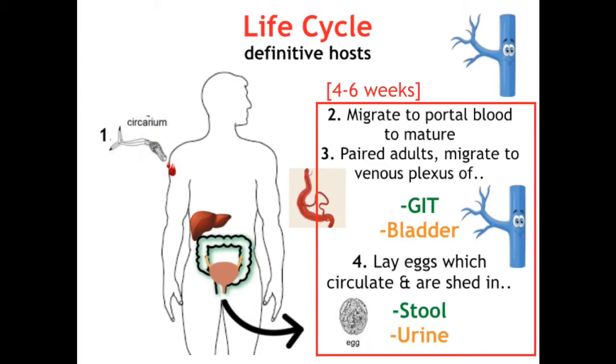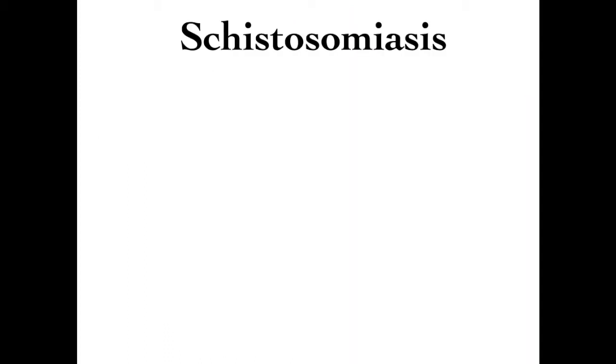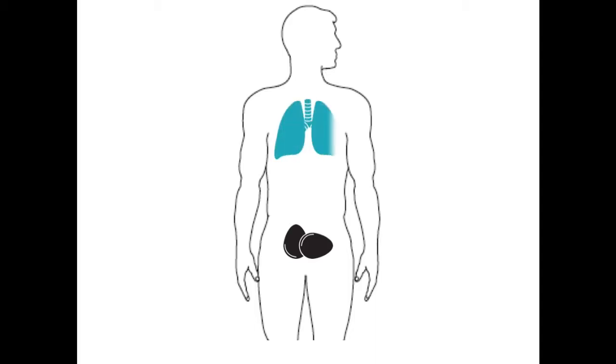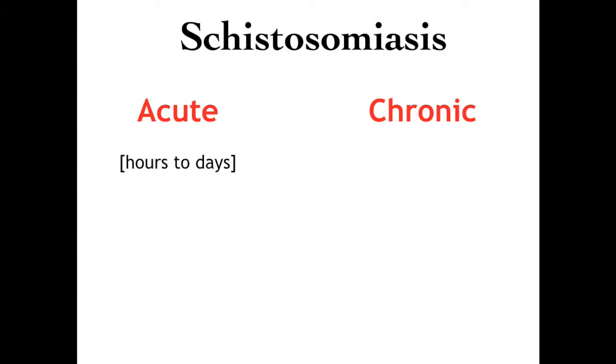In terms of clinical presentation, patients are initially asymptomatic until those paired adults migrate to the veins of the GIT or bladder to lay eggs. That's when symptoms typically present. There are two categories of syndromes: acute and chronic, based on time of onset of symptoms post-egg laying. We're talking upwards of a thousand eggs per day per worm pair. These eggs are released within the lumen of veins containing flowing blood, so they can get swept into the bloodstream, gaining access to systemic circulation, causing a systemic serum sickness-like reaction — acute schistosomiasis.